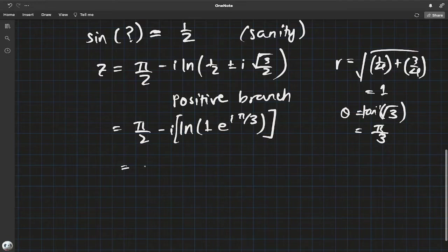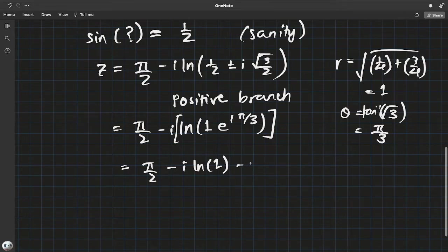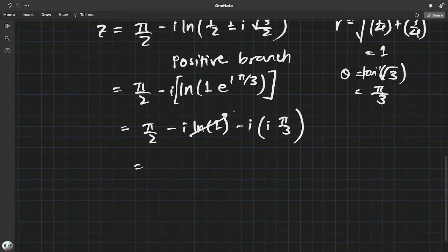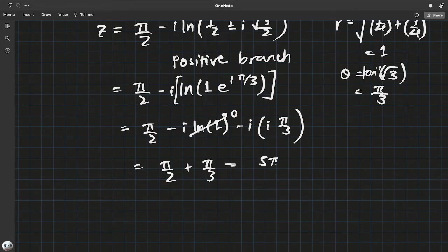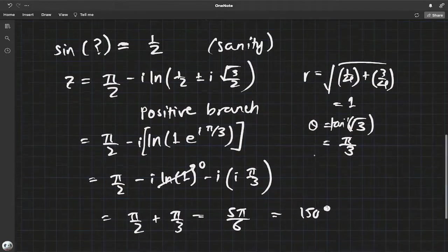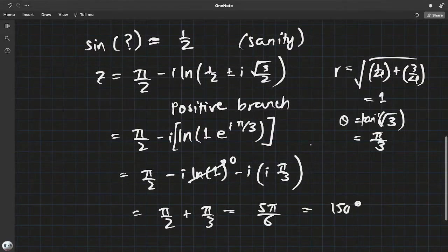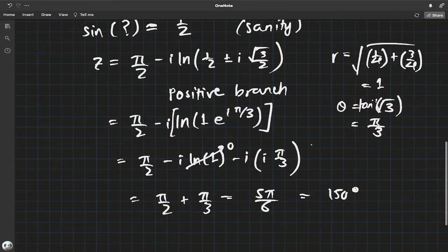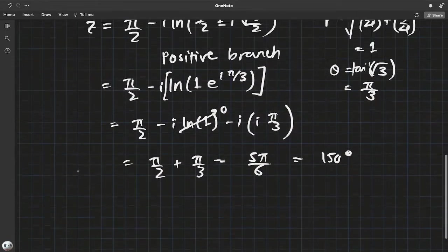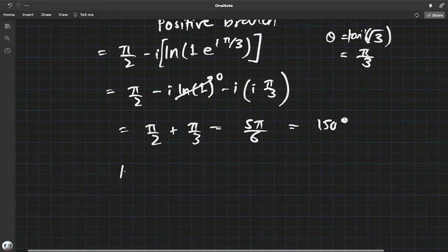So we have π/2 minus i times natural log of r, which is one, times e^(iπ/3). So π/2 minus i natural log of one minus i natural log of e^(iπ/3). Natural log of one is zero, so we get π/2, and i² minus turns to plus π/3, which turns out to be 5π/6 or 150°, which is also one half. Mind you, it's not in the first quadrant, but it is one half.